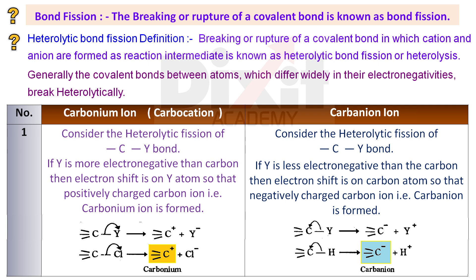Consider the heterolytic bond fission of a C-Y bond. If Y is less electronegative than the carbon atom, then the electron shift is onto the carbon atom, so that a negatively charged carbon ion — that is, a carbanion — is formed.